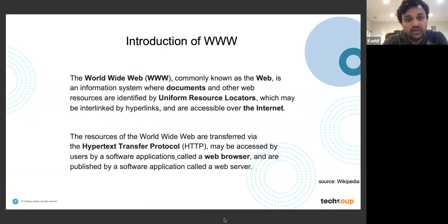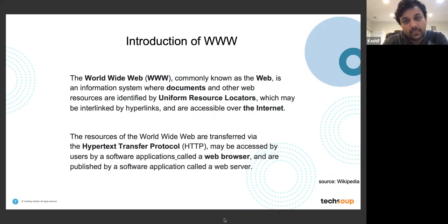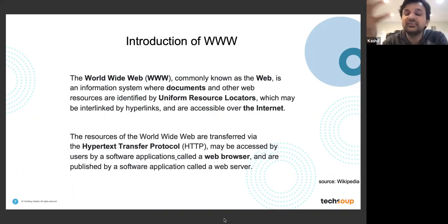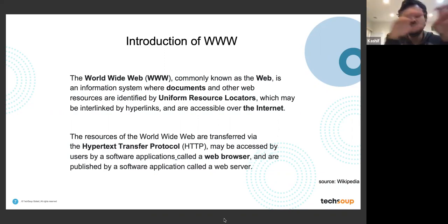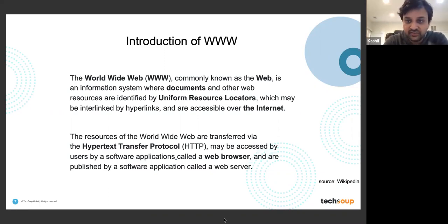The World Wide Web, commonly known as the web, is an information system where documents and other resources are identified by a Uniform Resource Locator and are accessible over the internet. The internet and the web are two different things: the internet is the infrastructure that the web uses to access its resources.